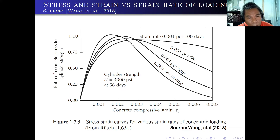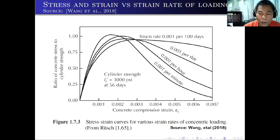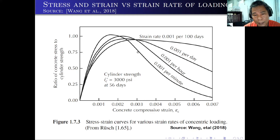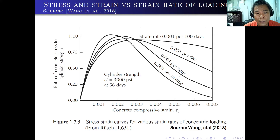We also have another diagram according to the rate of concentric loading. For a very slow concentric loading, as you can see, the curves are almost the same except after 0.003 strain. Depending on the rate, it will vary the ratio of the concrete stress to the concrete cylinder strength.